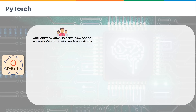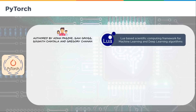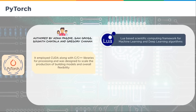From Keras we move to PyTorch, authored by Adam Paszke, Sam Gross, Sumit Chintala, and Gregory Chanan. It's a Lua-based scientific computing framework for machine learning and deep learning algorithms, built for the scientific computing teams looking at answers for science. It employs CUDA along with C and C++ libraries for processing, and was designed to scale the building of models with overall flexibility. If you're a C or C++ programmer, PyTorch is a great fit because you know the back end and can see what's going on with that particular framework.